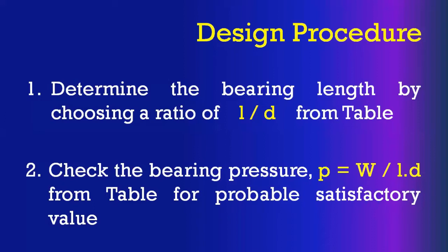The first step in the design of a hydrodynamic journal bearing is to determine the bearing length by choosing the L/D ratio from the table. You should keep your data book with you while solving design problems. First, you need to select the suitable L/D ratio based on the given application — whether it is a centrifugal pump, a motor, or whatever it is — from the design data handbook.